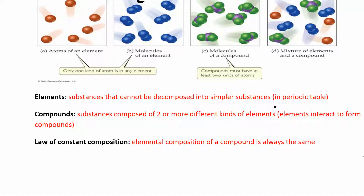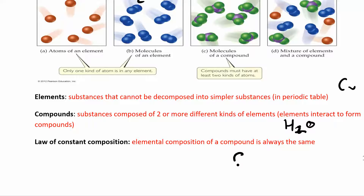Pick a favorite element! Compounds are made of two or more different kinds of elements — copper is an element, while water is a compound made of hydrogen and oxygen. The law of constant composition, or law of definite proportions, means that the elemental composition of a compound is always the same. Any sample of water will always have two atoms of hydrogen for every one atom of oxygen.